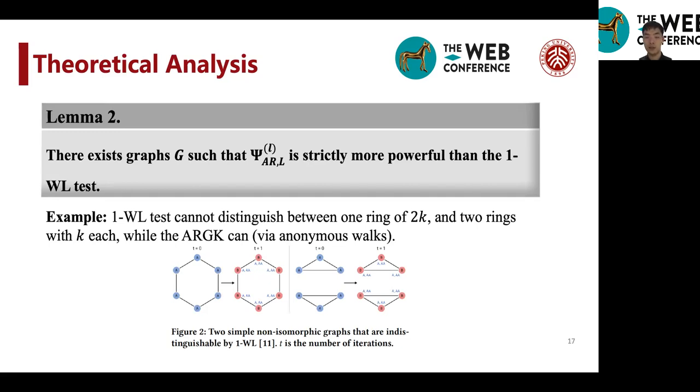And therefore, we show that our ARWK can easily distinguish these two via anonymous walks. We just let them walk and see whether there are node sequences of greater or equal to K. And that is sufficient to show this result.